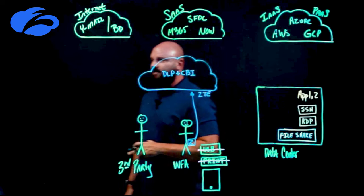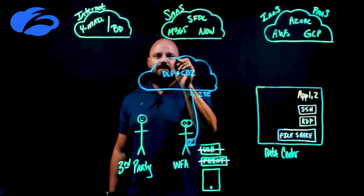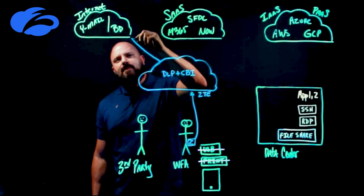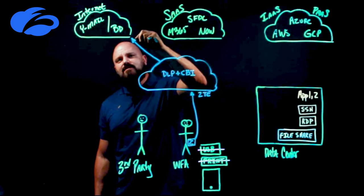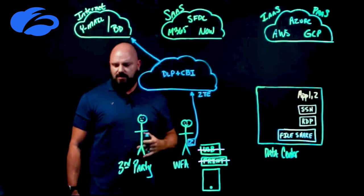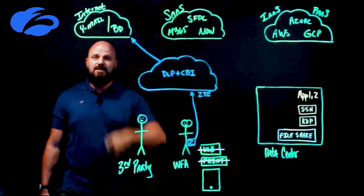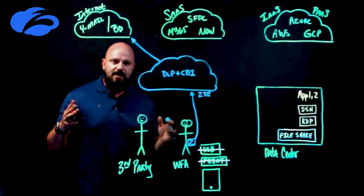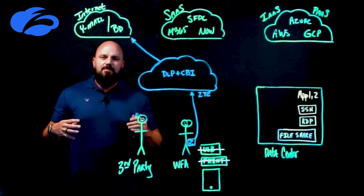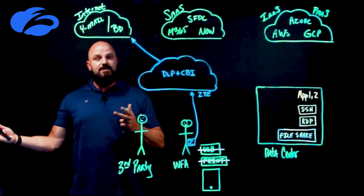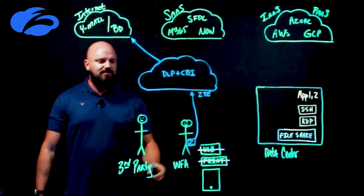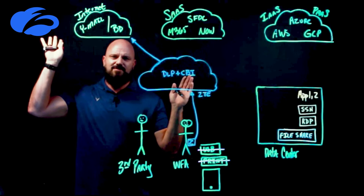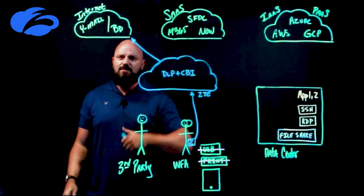The next big use case: these users are going out to the internet day in and day out, so we want to make sure happy users do more — and that's okay. Let's give them internet access without introducing risk. They can check email, and I can allow or block downloading, or do isolation, or detect if they're trying to take something sensitive and put it in an email and send it off — and stop that from happening.